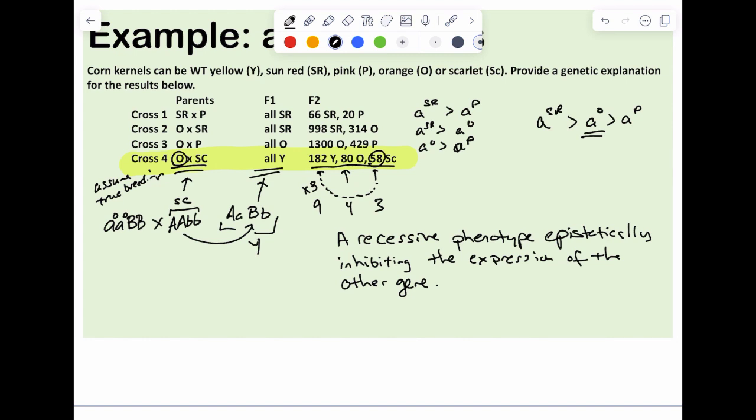So typically when you're asked to explain what's going on, a sentence saying what type of interaction is going on, if you don't remember that it's called recessive epistasis, you can say, oh, but I know that it's a recessive that's interfering with something else, which is effectively saying it's recessive epistasis. You can describe what's going on, but what you also need to do is provide genotypes. Oh, crap, how are we going to figure out genotypes? Well, again, the 9, 3, 3, 1, there's the yellow, there's the scarlet, and there's the orange.